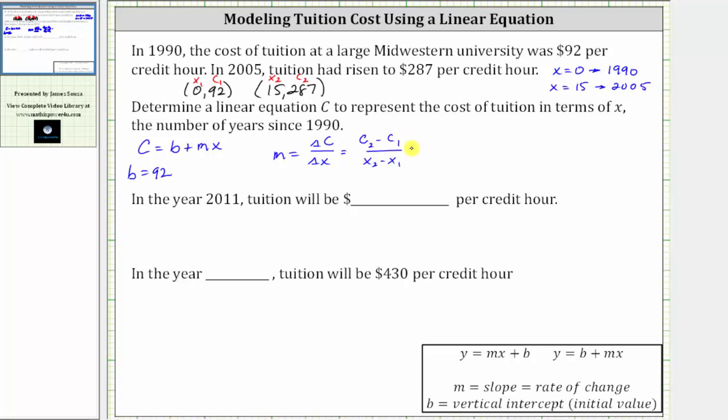The change in C equals 287 minus 92, and the change in x equals 15 minus zero. 287 minus 92 equals 195, and 15 minus zero equals 15. 195 divided by 15 equals 13. So the slope or constant rate of change is 13.